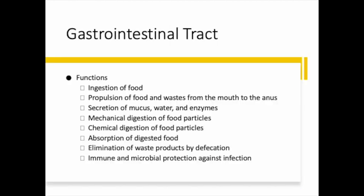First it starts with ingestion of food — and sometimes we forget that the GI tract actually does start at the mouth. It's responsible for the propulsion of food and waste from the mouth to the anus. We also have the function of secretion of mucus, water, and enzymes which will break down food, as well as mechanical and chemical digestion. There must also be absorption of nutrients from the digested food, and finally the elimination of waste products. Our digestive tract also plays a part in our immune system and provides microbial protection against infection, and we'll be getting into more detail regarding all these functions in this presentation.